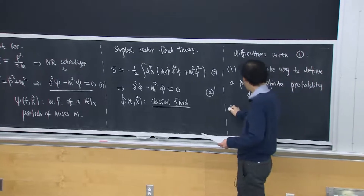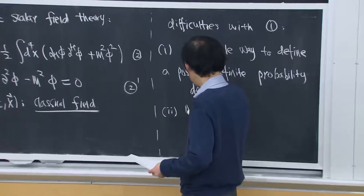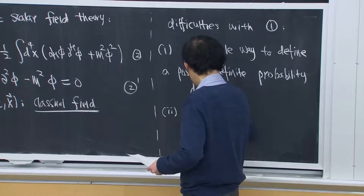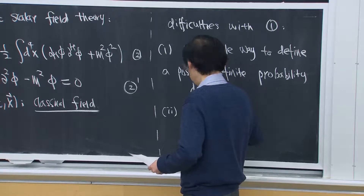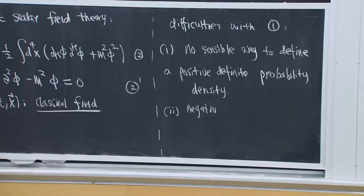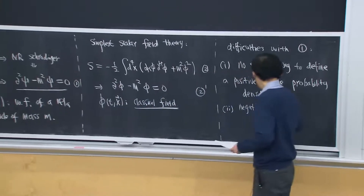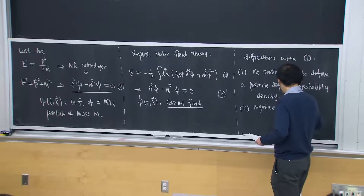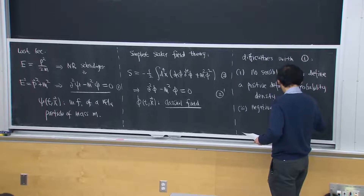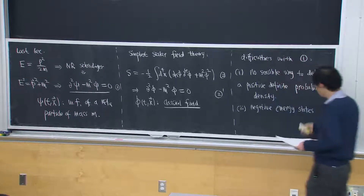The second difficulty is that there are negative energy states. Because of the square root, you get a minus sign, and there are negative energy states which you cannot avoid in quantum mechanics, even though classically you can just throw them away by hand.